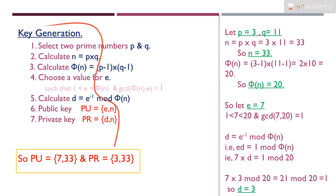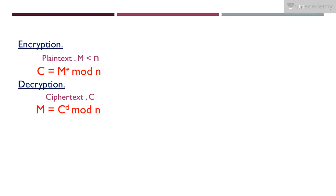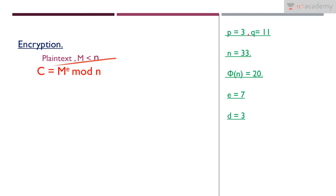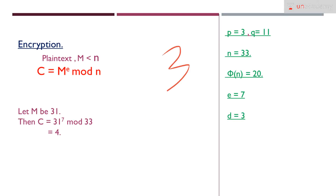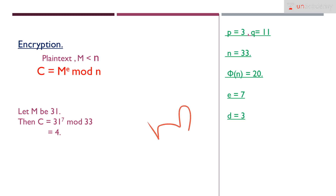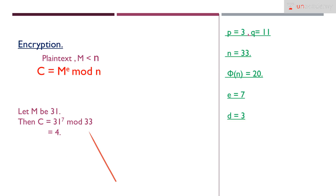For encryption, the plaintext message m must satisfy the condition that m is less than n, which is 33. I choose m equal to 31. The encryption equation is: ciphertext C = m^e mod n, which becomes 31^7 mod 33. Calculating this gives C equal to 4. So the ciphertext corresponding to plaintext 31 is 4.